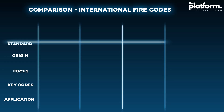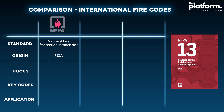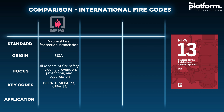Starting with the international fire code, the most famous one is the NFPA standard, founded in the United States. NFPA develops more than 300 codes and standards intended to minimize the risk and effects of fire. It covers all aspects of fire safety including prevention, protection, and suppression. Key codes include NFPA 1, NFPA 72, and NFPA 13.